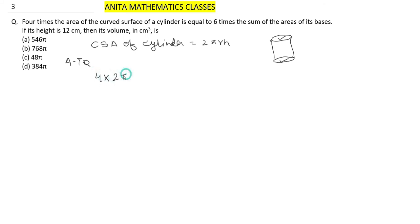Four times curved surface area 2πrh equals 6 times the sum, which is 6 times 2πr². So we have 4×2πrh = 6×2πr². When we simplify, π cancels out.